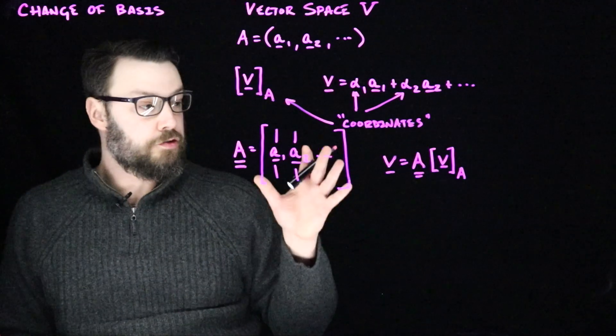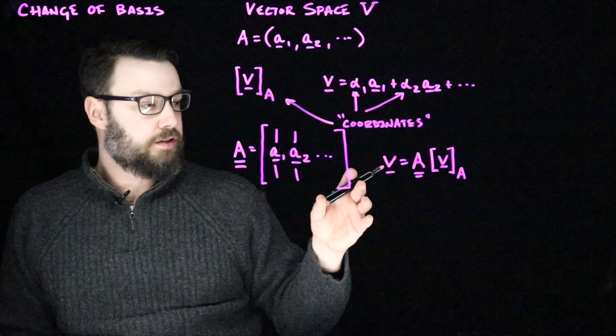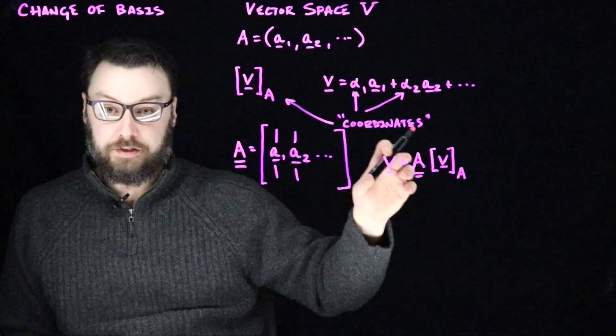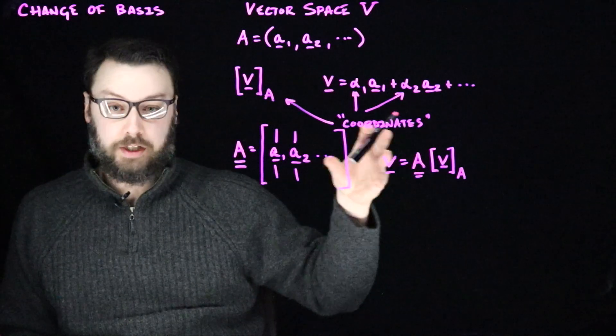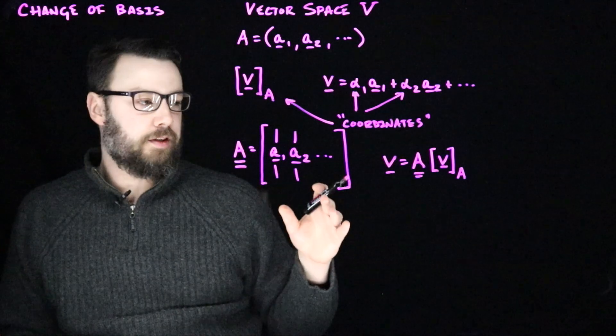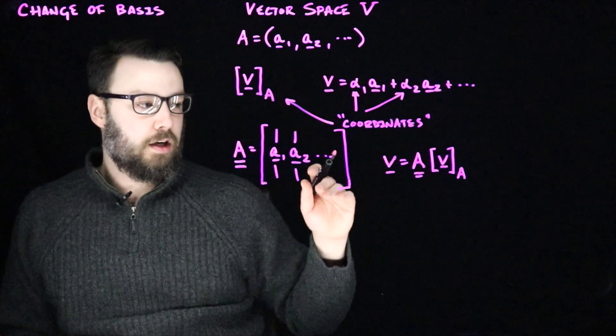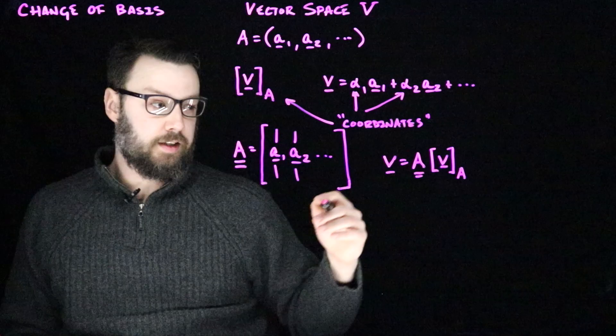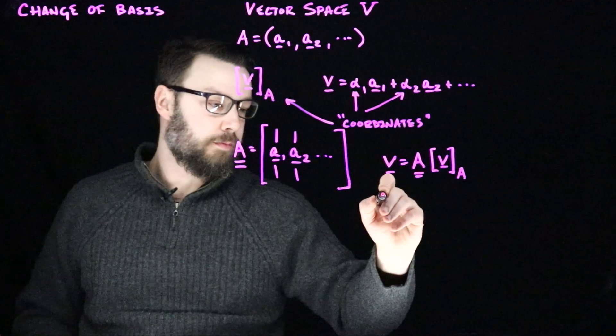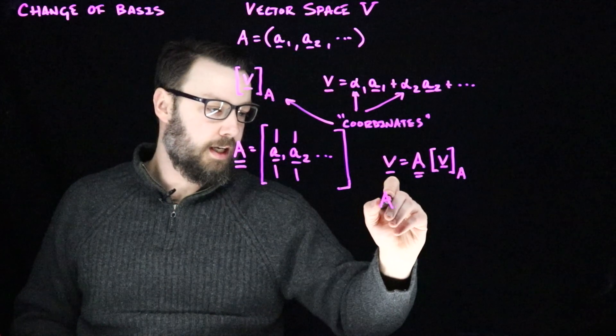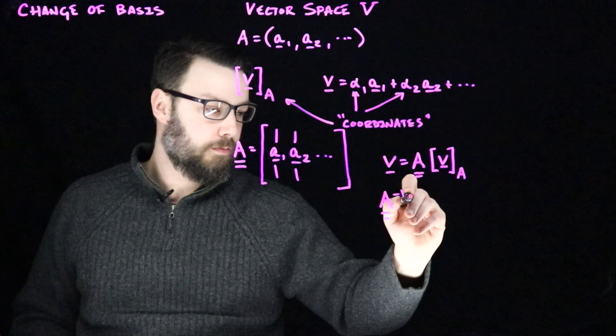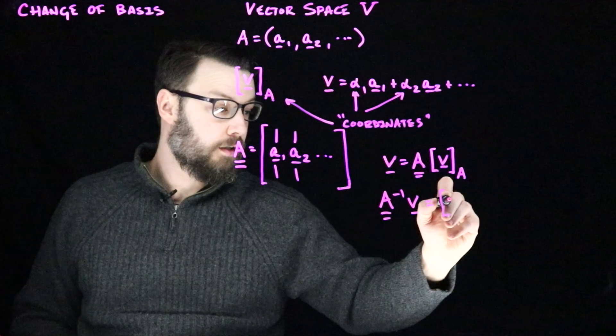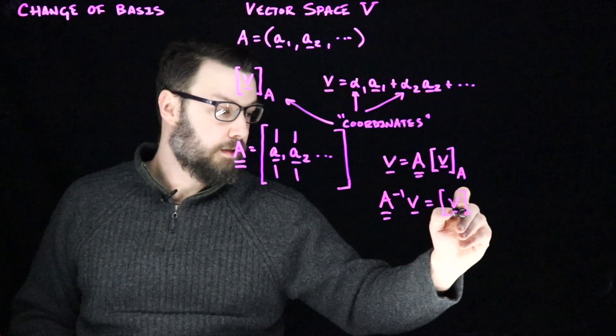I'm assuming that we have a situation where this is a basis whose span is all of V, and so A is a square matrix whose inverse exists. What that means is that if I wanted to ask, what are the coordinates of v with respect to the basis A, then I could get that by solving this linear system and saying something like A inverse v is the coordinates of v in the basis A.